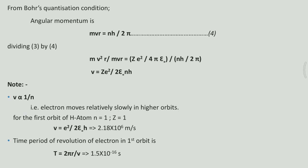Dividing the first equation by the second, mv²r / mvr = [Ze² / (4πε₀)] / [nh / (2π)]. This gives v = Ze² / (2ε₀nh), which is the expression for the orbital velocity. From this expression, it is clear that except the value of n, the remaining quantities are all constants, and Z = 1 for hydrogen atom.